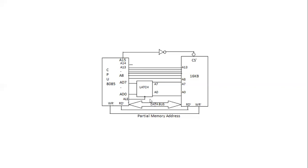When the ALE signal is enabled, the data placed on A0 to A7 are considered as address. When ALE goes low — when address latch enable goes low — then the data present on A0 to A7 will be considered as data. So the same lines are used for dual purpose: one is for the address bus, and the same lines are also used as the data bus.